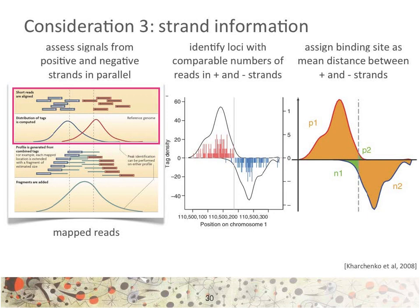In ChIP-seq, the DNA is protected by the protein of interest during the shearing fragmentation. The surviving fragments, after deprotection, will have their ends sequenced. This results in an increase of reads before and after the actual binding point of the protein, as exemplified in the pink box in the first column. If a proportion of reads on the plus and minus strand is similar, a candidate region is called. The actual binding site position will be identified as the mean distance between the positive and negative strand peaks — loci calling.